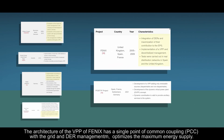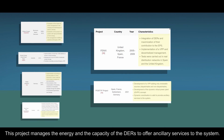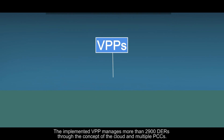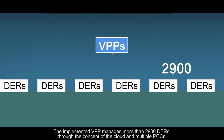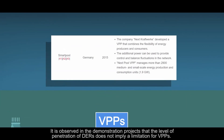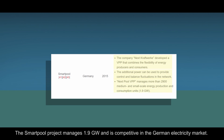The architecture of the Phoenix virtual power plant has a single point of common coupling with the grid, and distributed energy resource management optimizes the maximum energy supply. On the other hand, the Positive project uses the concept of the cloud to control distributed energy resources at multiple points of common coupling with the grid. This project manages the energy and the capacity of the distributed energy resources to offer ancillary services to the system. Another interesting example is SmartPool from the company NextCraftWork. The implemented virtual power plant manages more than 2,900 distributed energy resources through the concept of the cloud and multiple points of common coupling. The management of each controllable distributed energy resource, such as biogas power plants, uses their flexibility to stabilize the system with secondary frequency regulation. It is observed in the demonstration projects that the level of penetration of distributed energy resources does not imply a limitation for virtual power plants. The SmartPool project manages 1.9 gigawatts and is competitive in the German electricity market.